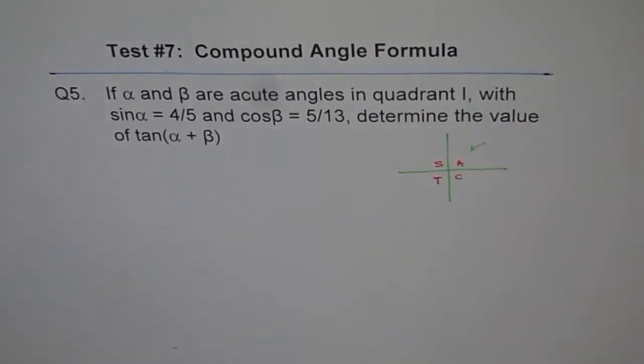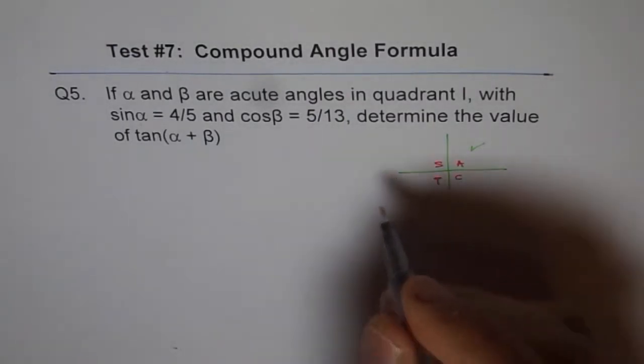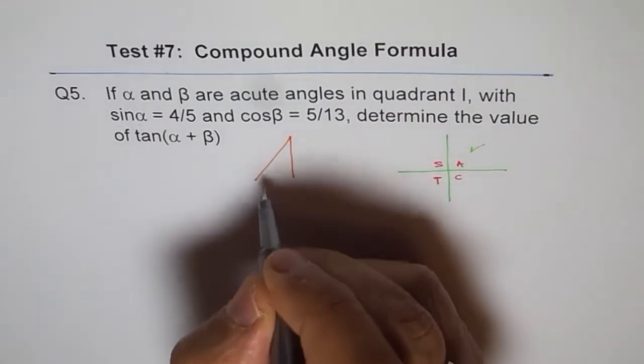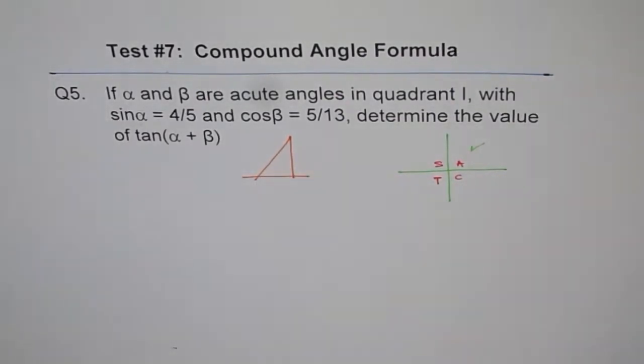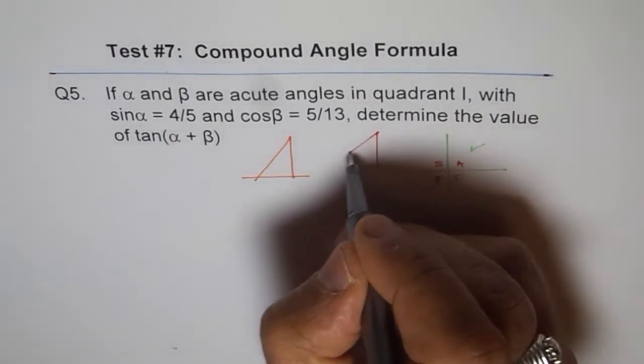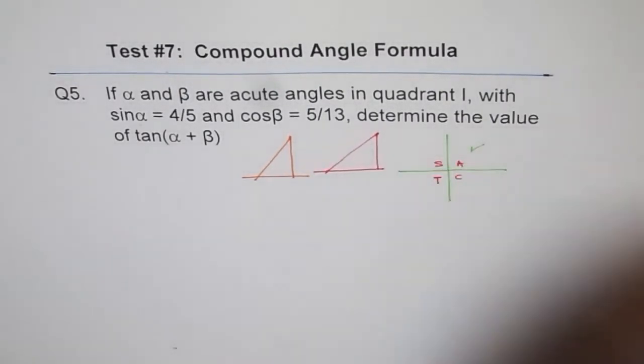Now we have two triangles. We are dealing with two triangles here. One is α. Let's make those two triangles. So let's say this is our triangle 1 and then that is our triangle 2. Correct?